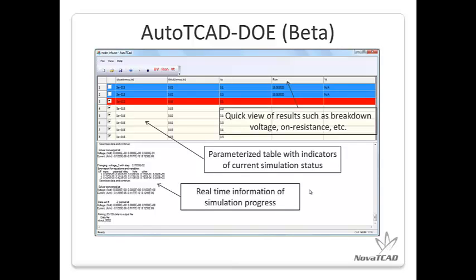AutoTCAD is CrossLite's name for the design of experiments. AutoTCAD is capable of generating a spreadsheet of design parameters, with calculated results of each node shown in a table. Dynamic real-time simulation log information is provided as well.